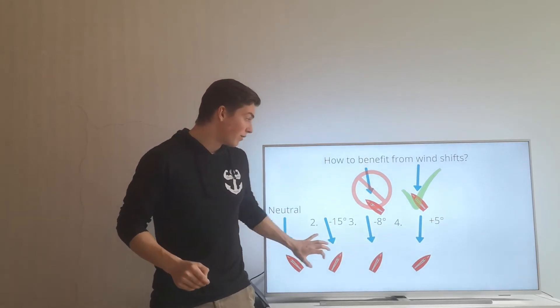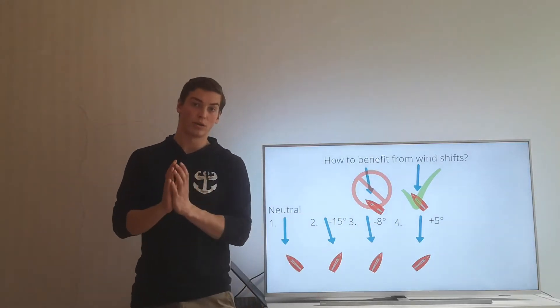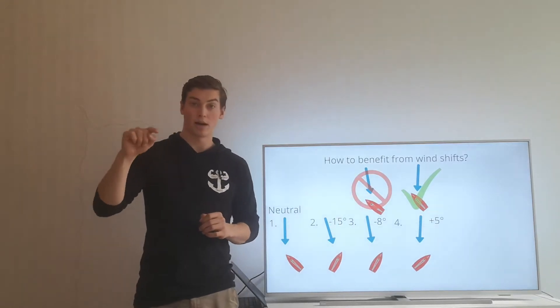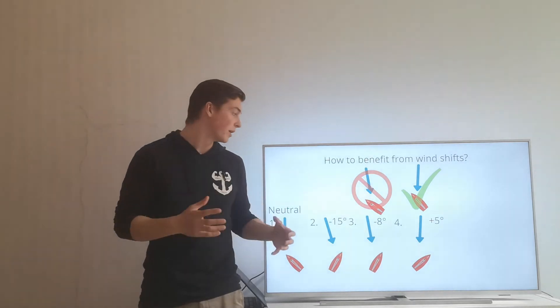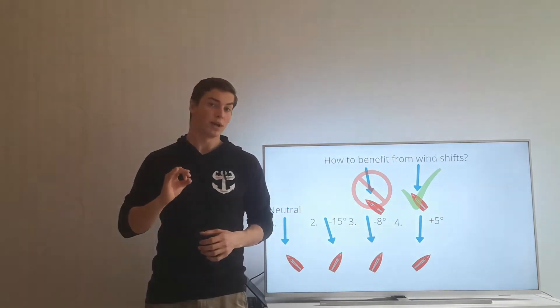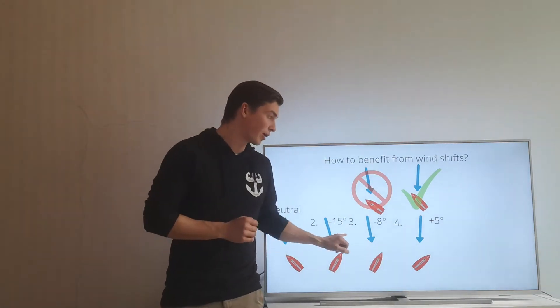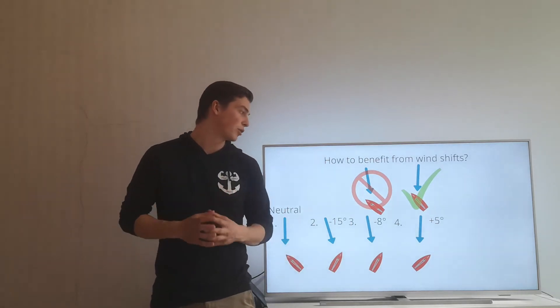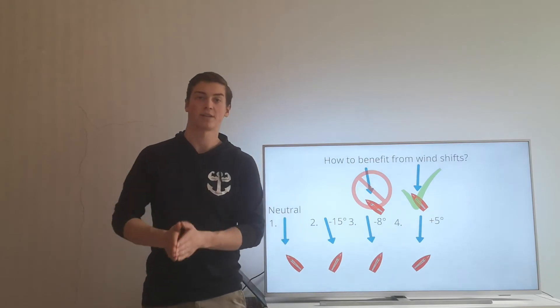This obviously requires us to somehow know what the neutral wind is. That requires us, before the race, to sail quite a bit on the race course area so that we get an understanding of what the neutral wind is. And it also requires us to know where we're pointing when we have the neutral wind. A compass would be the obvious choice, then you have facts.